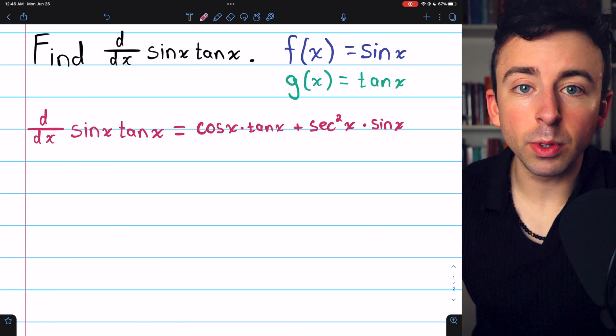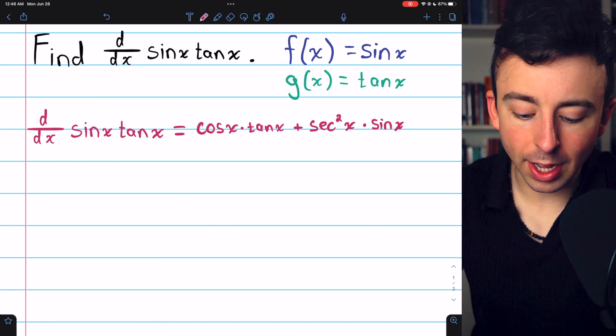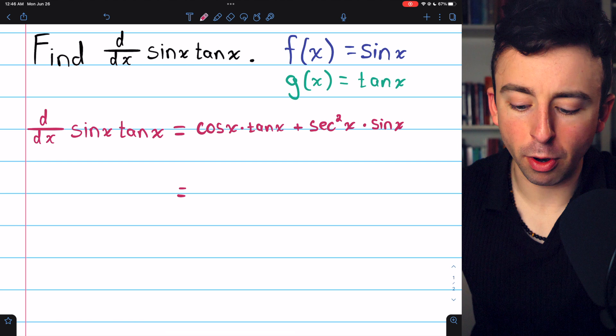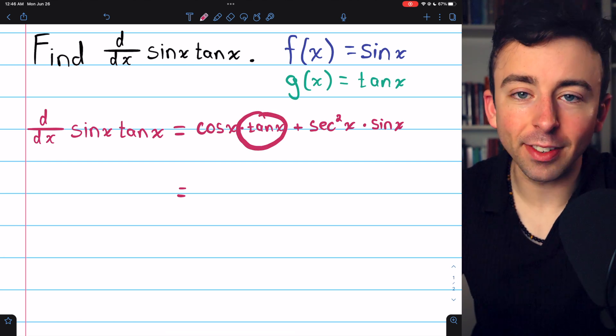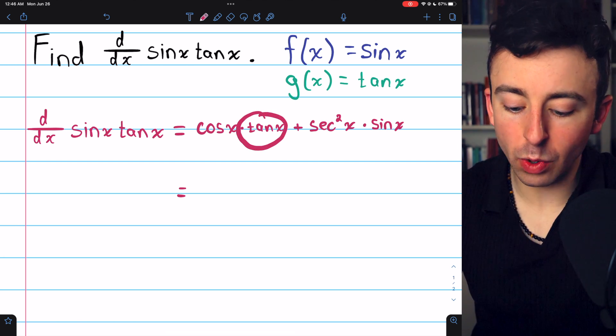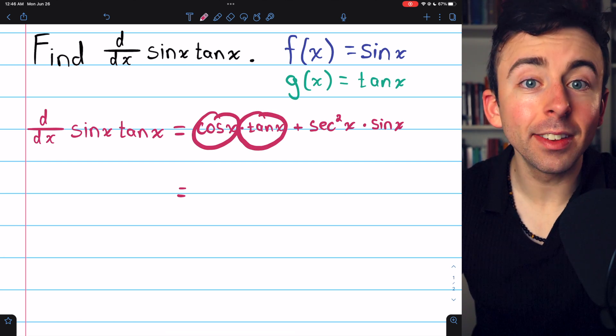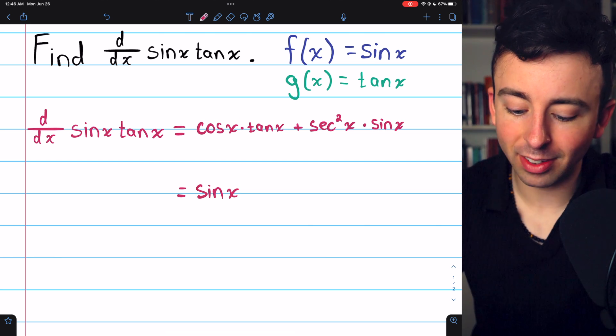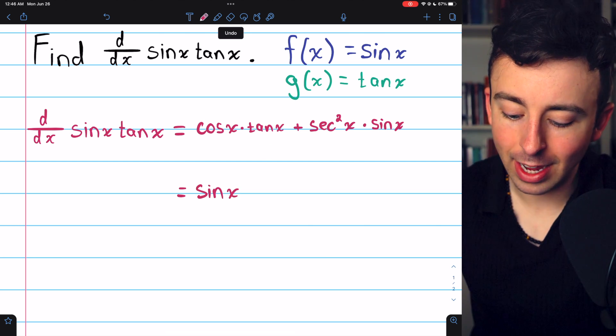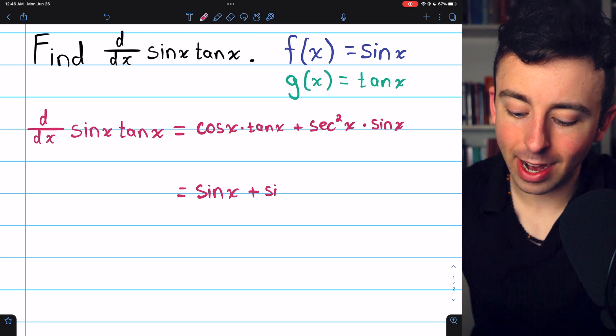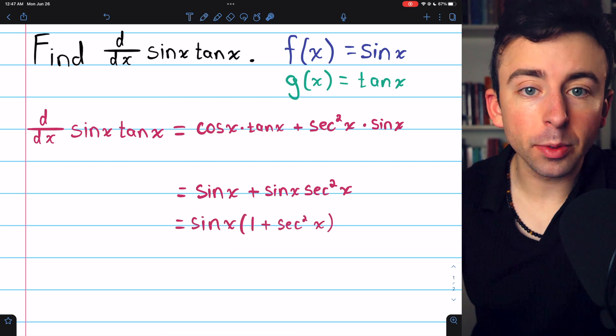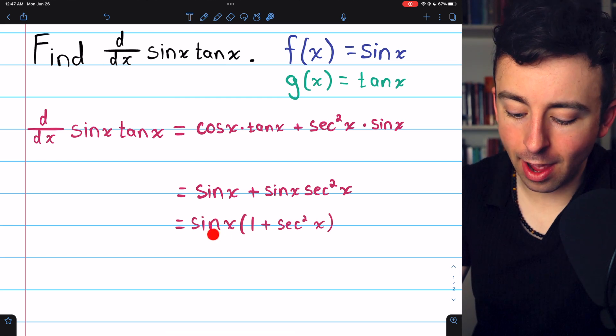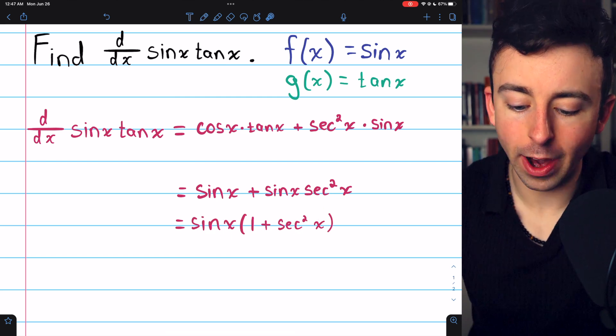As is often the case with trig functions, there's different ways we could write this. There is some obvious simplification we probably should do though. Tangent is sine over cosine, so when we multiply that by cosine, the cosines cancel out and we're actually just left with sine. So this guy on the left is just sine, and then on the right we have sine x times secant squared, and we might as well factor a sine out of this. Factoring out the sine, we get sine times one plus secant squared.